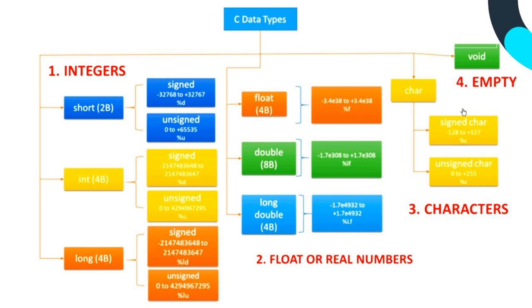The third data type is the character data type, which is char, and they are of two types: signed char and unsigned char. The last data type is the void data type, which is an empty data type.